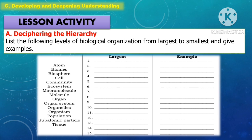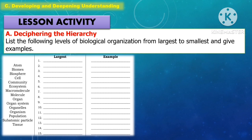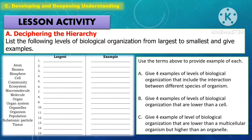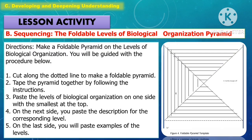For the lesson activity, the students will list the following levels of biological organization from the largest to the smallest and give examples. For part two of the lesson activity, the students will make a foldable pyramid on the levels of biological organization.